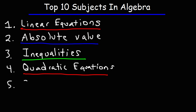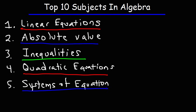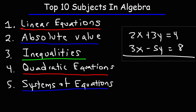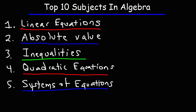The next topic is solving systems of equations. You can have a system of two or three equations. For example: 2x plus 3y equals 4, and 3x minus 5y equals 8 — that's a system of two linear equations. You can solve it using the substitution method or the elimination method. For systems of three equations with variables x, y, and z, you can search 'systems of equations organic chemistry tutor' on YouTube.